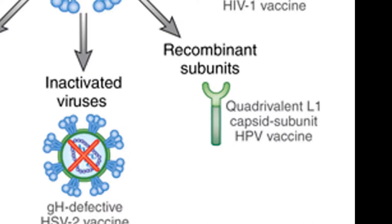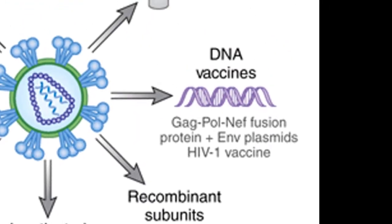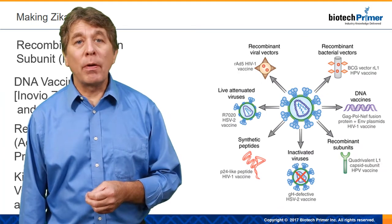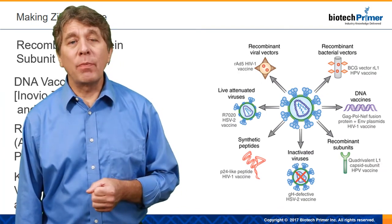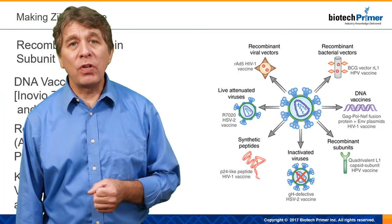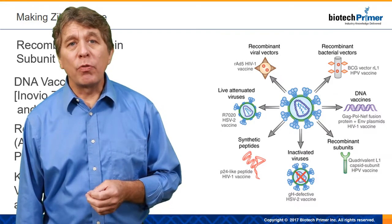Another way to do this is to use a DNA vaccine. Here, instead of isolating the protein, we're going to take a gene from the Zika virus that codes for a protein that appears on the surface of the virus, put that gene into people, and the person's own cells will make the Zika protein, which will activate an immune response.